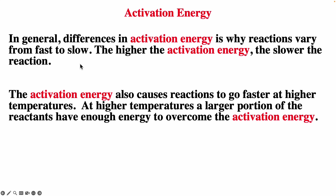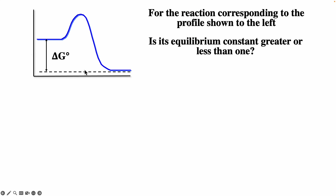The activation energy also causes reactions to go faster at higher temperatures. At higher temperatures, a large portion of the reactants have enough energy to overcome the activation energy. Looking at this reaction profile, its equilibrium constant depends on the difference in energy between products and reactants. Here, the products are more stable, so we should have mostly products at equilibrium, so K should be greater than 1.